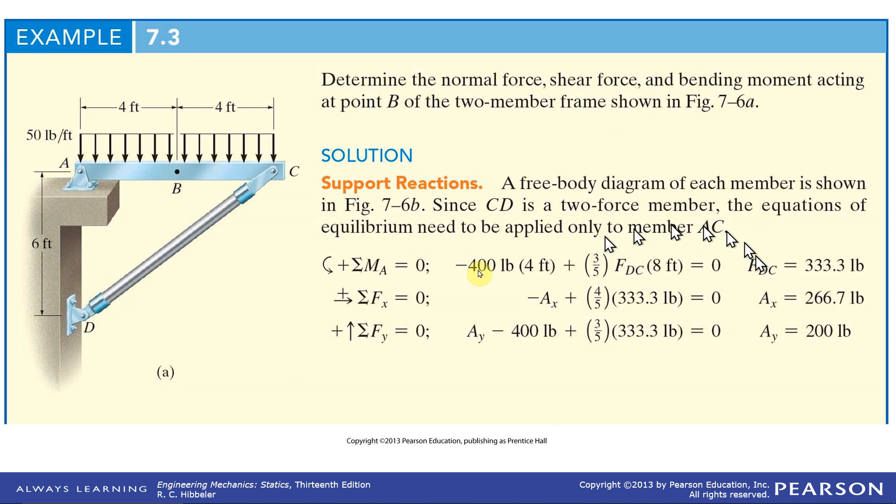We have 50 foot-pounds times 8 feet, that's 400 pounds acting at point B, the midpoint. And then we get the reaction forces. We'll have Ay, the vertical of A, minus 400 pounds, that'd be the equivalent force acting up at point B. And then this is a 3-4-5 right triangle, which makes the sines and cosines a little easier.